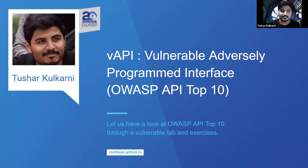Thank you for having me on OWASP's 20th anniversary event. I'll be speaking about VAPI, which is a Vulnerable Adversely Programmed Interface. It is a lab that mimics or demonstrates OWASP API top 10 vulnerabilities as part of an exercise, so people get familiar with the categorization of API vulnerabilities. Development and implementation of APIs has been increasingly growing on a day-to-day basis, be it through custom routes or default routes that come as part of the framework you're using.